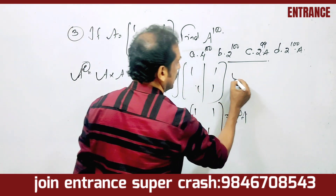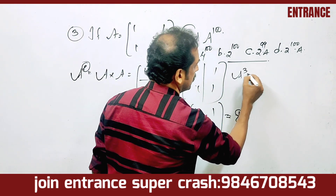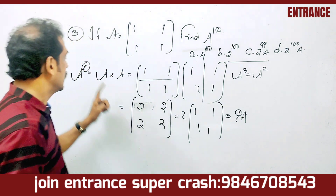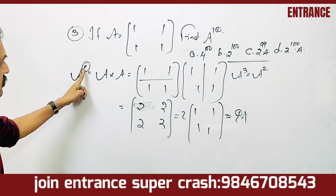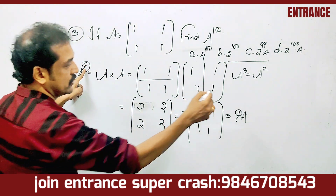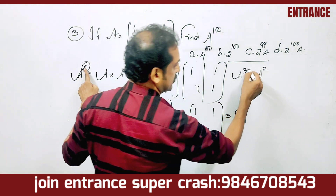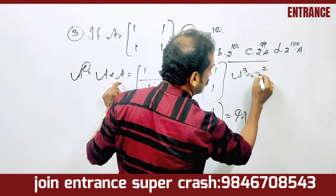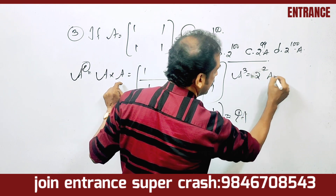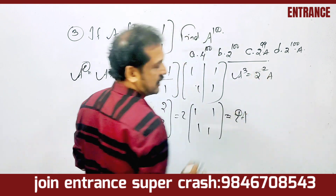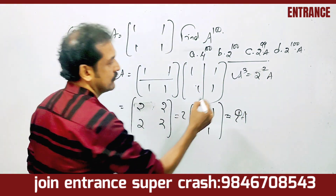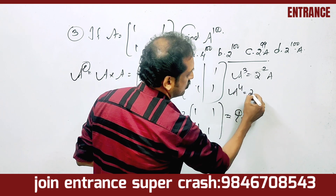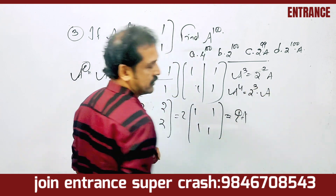Following the pattern: A cubed equals 2 raised to 2 into A, and A raised to 4 equals 2 cubed into A.